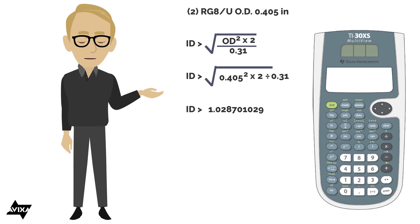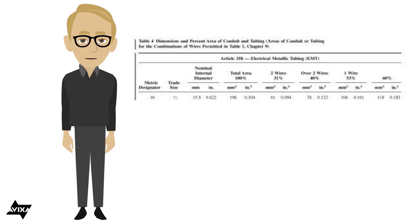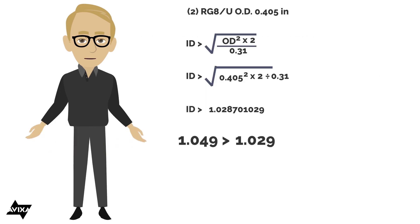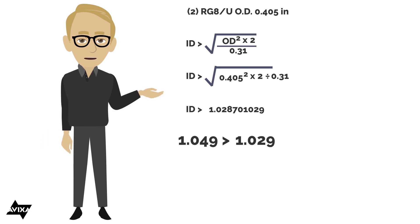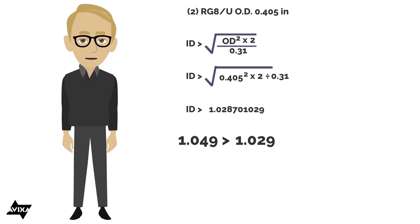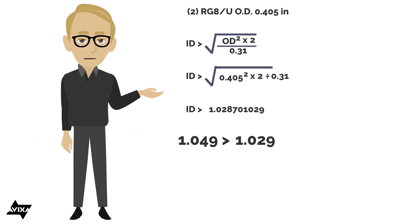So I'm looking for something a little larger than 1.03. Comparing to available conduit sizes: half inch is 0.622 — too small. Three-quarter is 0.824 — still too small. A trade size 1 has an inner diameter of 1.049. Since 1.049 is larger than 1.029, we could use a conduit of trade size 1 in that case.